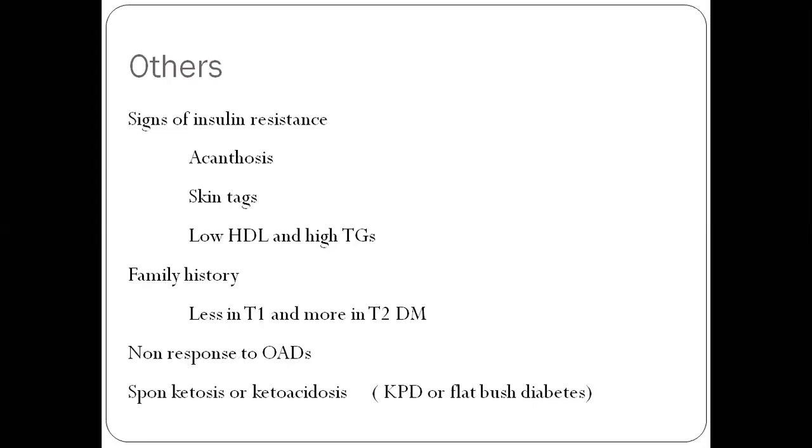What are the other features? Signs of insulin resistance. If you've got acanthosis, skin tags, low HDL and high TGs, they point towards type 2 diabetes. Important thing to remember, high TG can occur in acute hyperglycemia also. If your blood glucose is 500, then TG will be high. So you need to control the glucose first. Family history is a feature typically seen in type 2 diabetes. Type 1 diabetes patients will not have a strong family history. And of course, non-response to OADs. If somebody has taken oral drugs for diabetes and there has been no response, then you should think of type 1 diabetes. And spontaneous ketosis as mentioned.